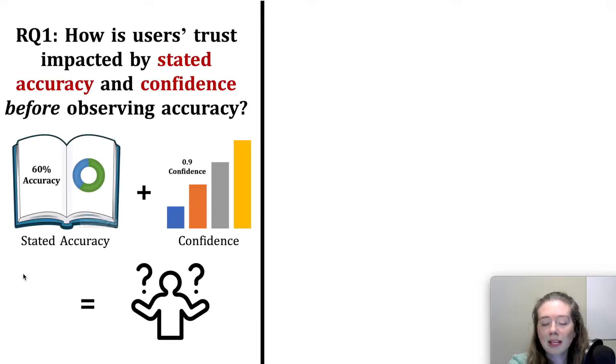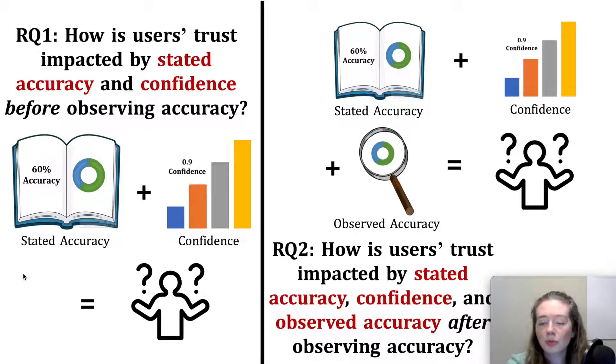To fill in this gap, we designed and conducted a randomized behavioral experiment with subjects recruited from Amazon Mechanical Turk to determine how users' trust in machine learning is impacted by the model's stated accuracy and its confidence before the model's accuracy is observed in practice and how all three performance indicators impact users' trust after the model's accuracy is observed in practice.